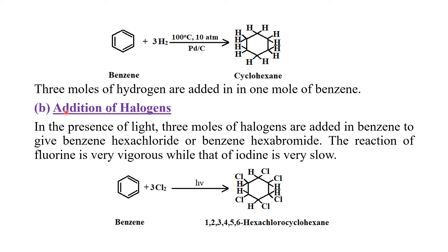दूसरा addition reaction है addition of halogen। Benzene में halogen के three moles add होकर benzene hexachloride या benzene hexabromide दे देती है। Fluorine का reaction बहुत ज्यादा vigorous है जबकि iodine का reaction बहुत ज्यादा slow है। जब benzene ring में halogens add होंगे तो हर carbon atom के साथ एक halogen atom add हो जाएगा - इस तरह से इसका नाम है 1,2,3,4,5,6-hexachlorocyclohexane।